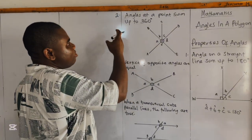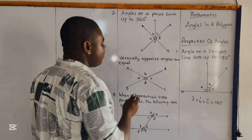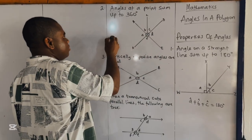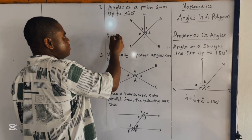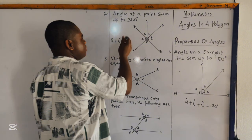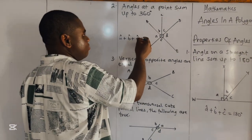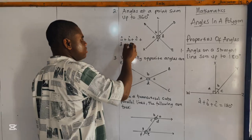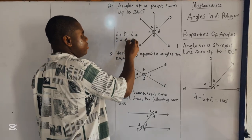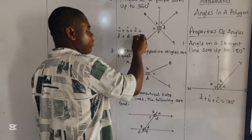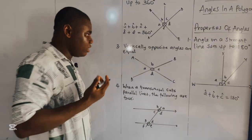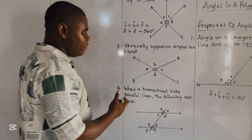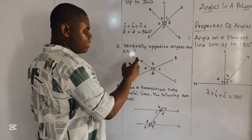Our next property: angles at a point sum up to 360 degrees. So if we have angles at a point, angle A plus angle B plus angle C plus angle D plus angle E all sum up to 360 degrees.